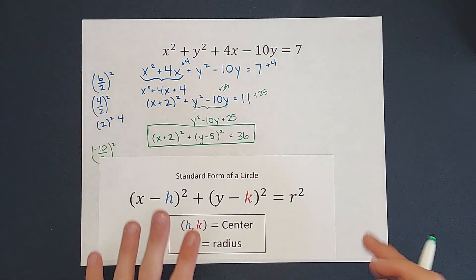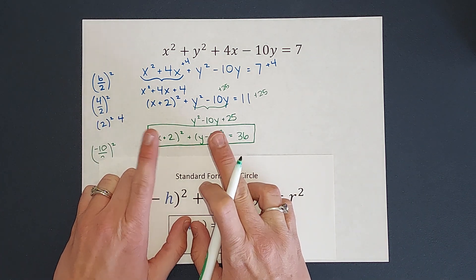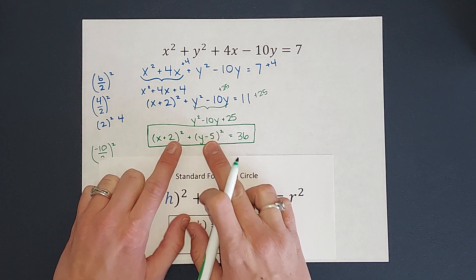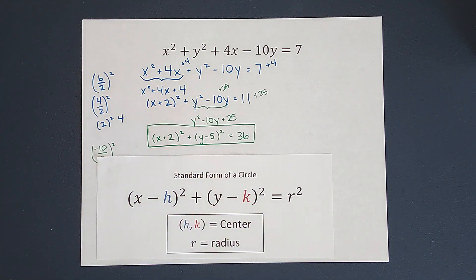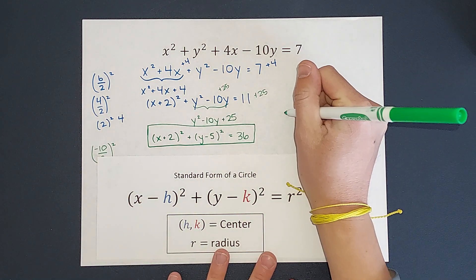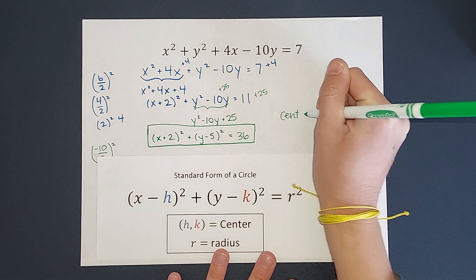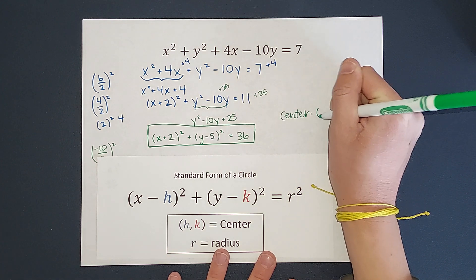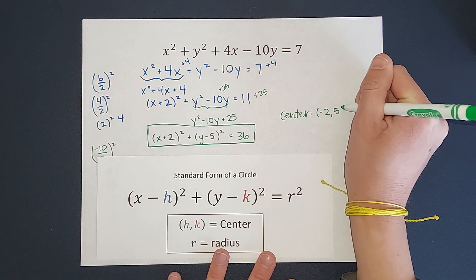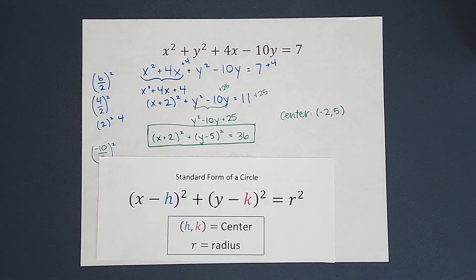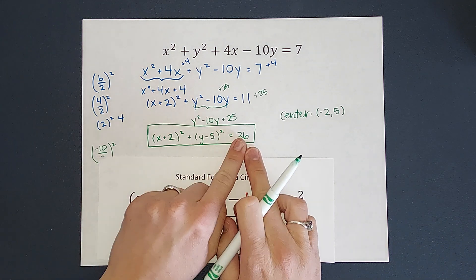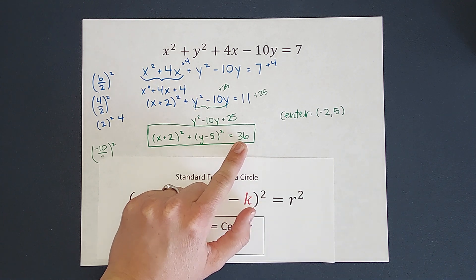Okay, so when it's like this, I know that my center is the h and k, and because of those minuses, we know it's the opposite sign, right? So my center is going to be negative 2, 5. If you're not super familiar with this part, I'll link a video in the corner. My center is negative 2, 5.